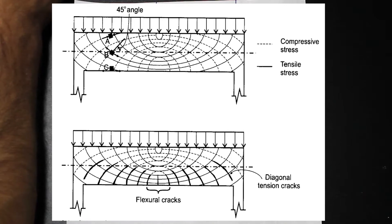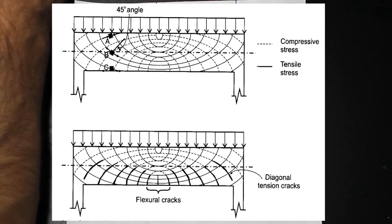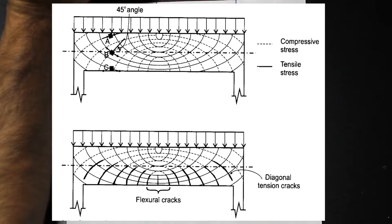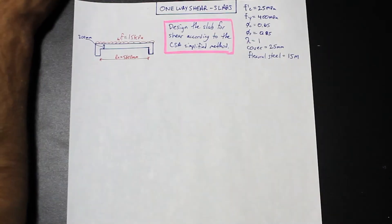We have compressive stresses above the neutral axis and tensile stresses below. In the center of the bottom beam, we have flexural cracks where the maximum bending moment is, and near the supports we have diagonal tension cracks caused by tensile stresses. Now, let's get back to the question.